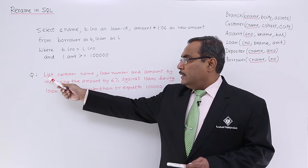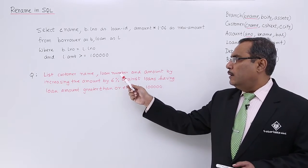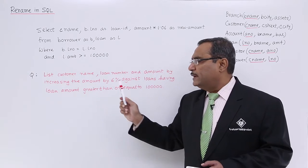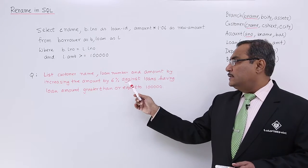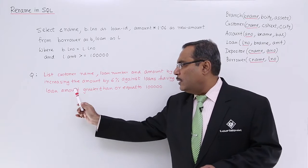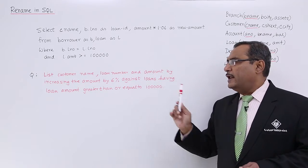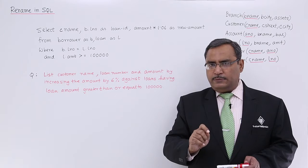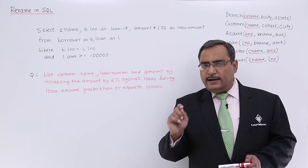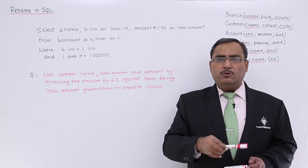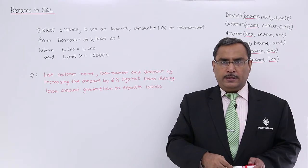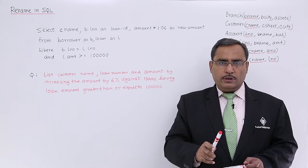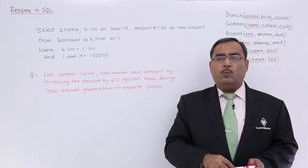List customer name, loan number and amount by increasing the amount by 6% against loans having loan amount greater than or equal to 1 lakh. That means I am supposed to display the customer name, the loan number and increased amount where amount will be increased by 6% for those loans having loan amount greater than or equal to 1 lakh.